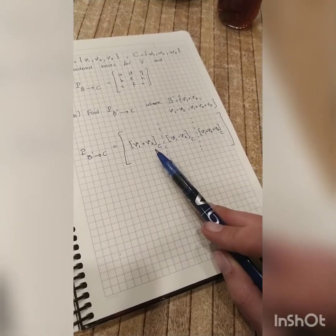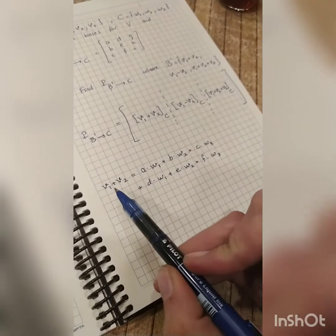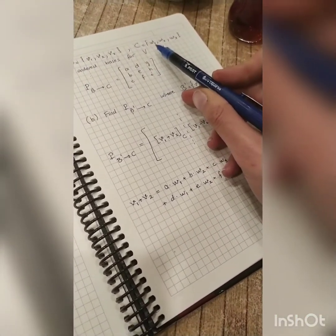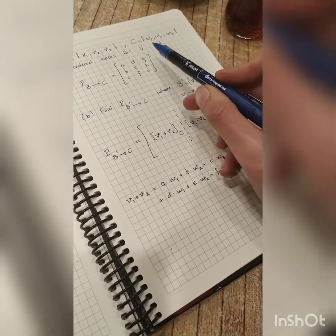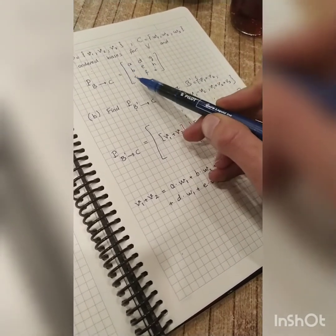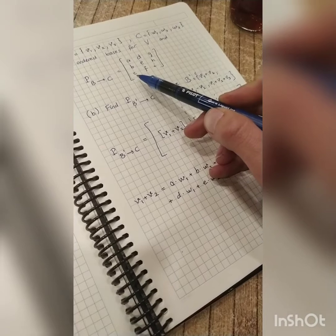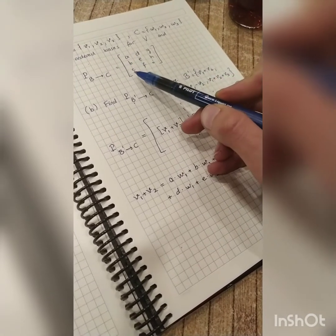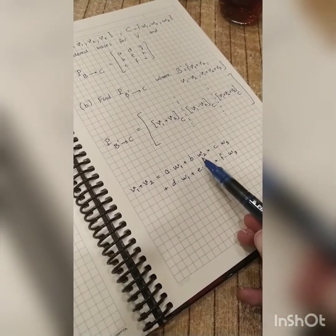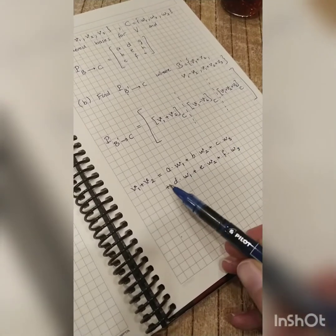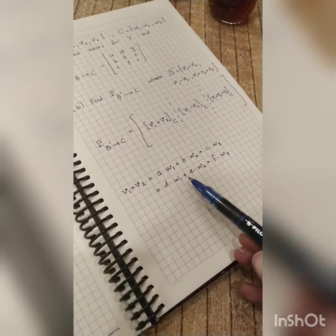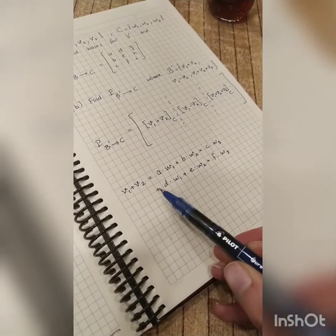So now I start with V1 plus V2. Now I'm looking for the coordinates of V1 plus V2 according to the basis C, the ordered basis C. So I'm looking for the coefficients of W1, W2, and W3 in this order. So since this matrix is given to me, I know that the coordinates of V1 according to C are these vectors, A, B, and C, meaning that V1 equals A times W1 plus B times W2 plus C times W3. So V2 also equals D times W1, E times W2, F times W3.